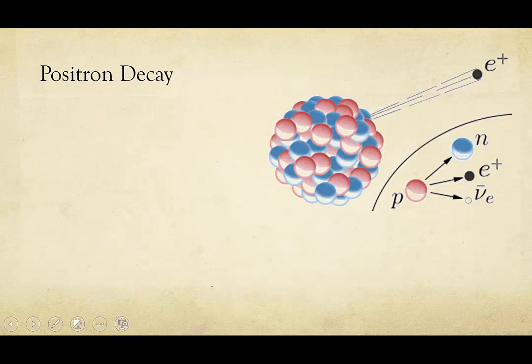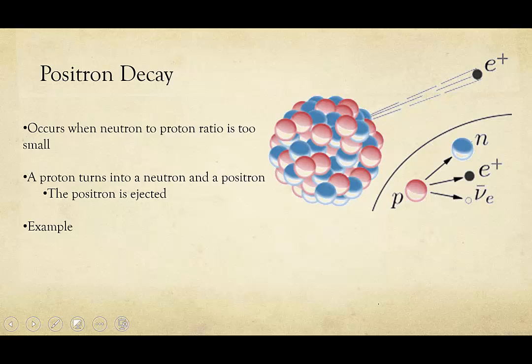Now let's talk about the other kind of beta decay, beta-positive, or positron decay. This occurs when the neutron-to-proton ratio is too small, or in other words, in neutron-deficient nuclei. A proton is turned into a neutron and a positron. The positron is ejected, and then the proton, which is now a neutron, stays in the nucleus.